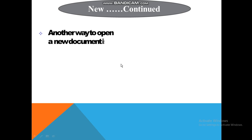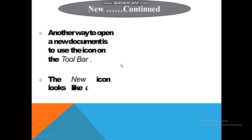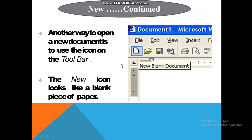Another way to open a new document is to use the icon on the toolbar। Toolbar पे वो सब चीजें होती हैं जो menu bar पे होती हैं, तो toolbar में भी New option है। आप देख सकते हो — यह जो एक blank document जैसा दिखाया गया है इस rectangular box में, अगर हम इस पे click करेंगे तो यह एक नया blank document open करेगा। तो नया document खोलने के तीन तरीके हैं: New option से, toolbar से, और Control + N press करना।